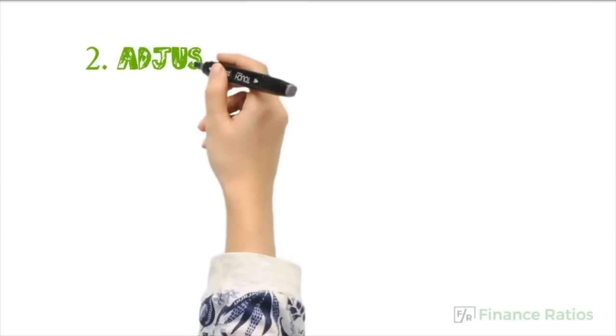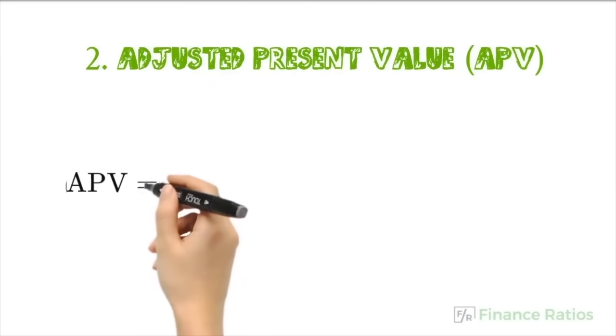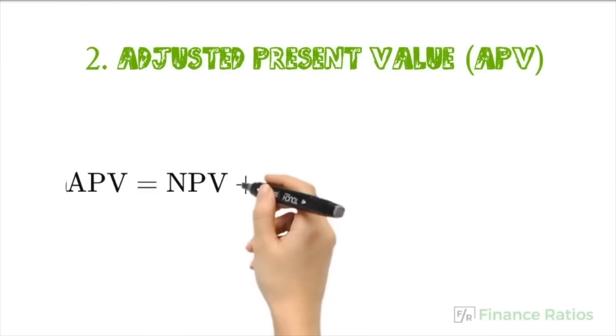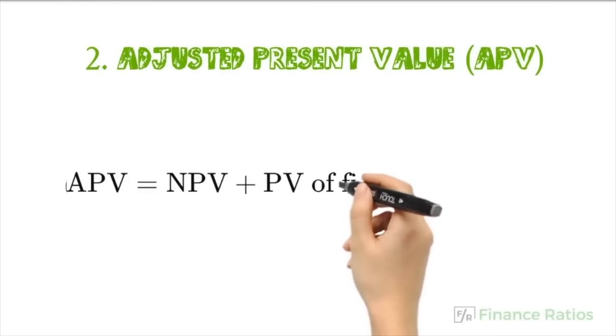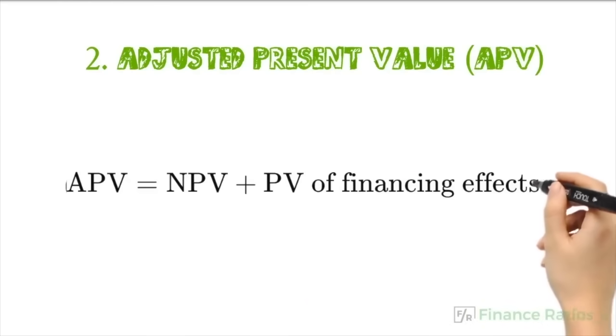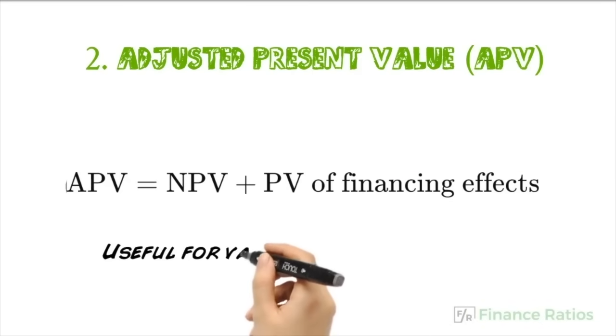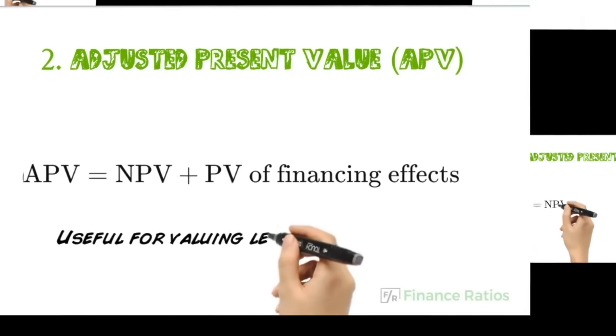Number two is adjusted present value, or APV. It is equal to the net present value of the project plus the present value of financing effects. It is useful for valuing leveraged projects and firms by separating financing effects from the project's NPV.